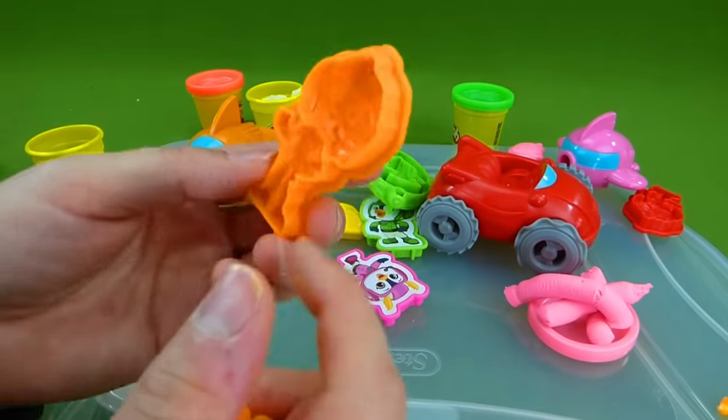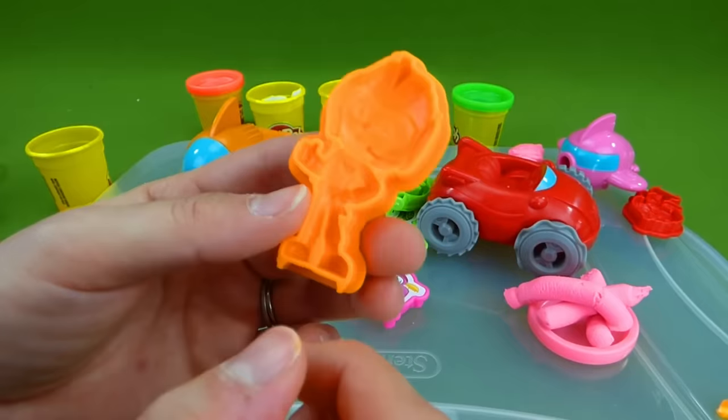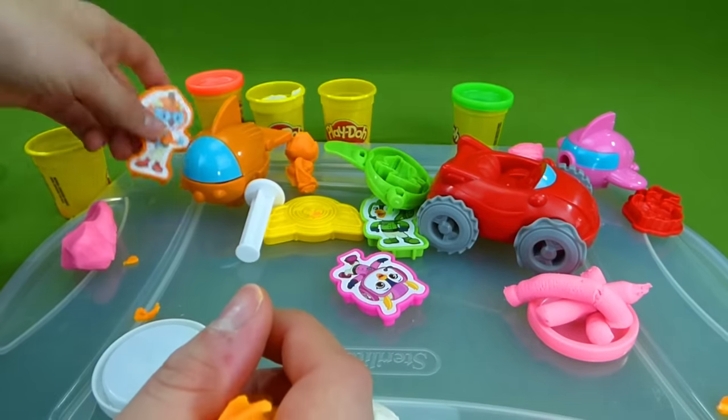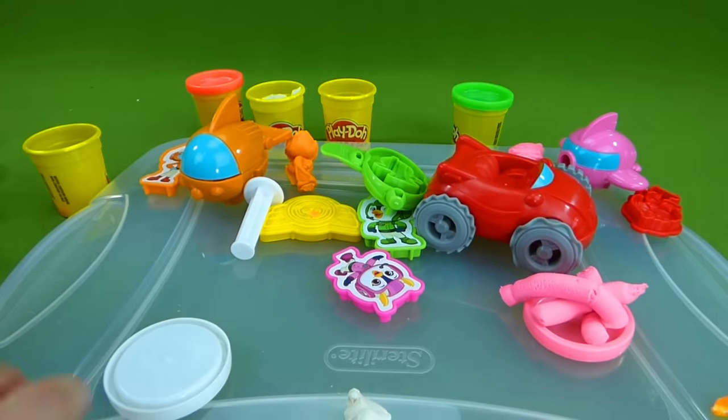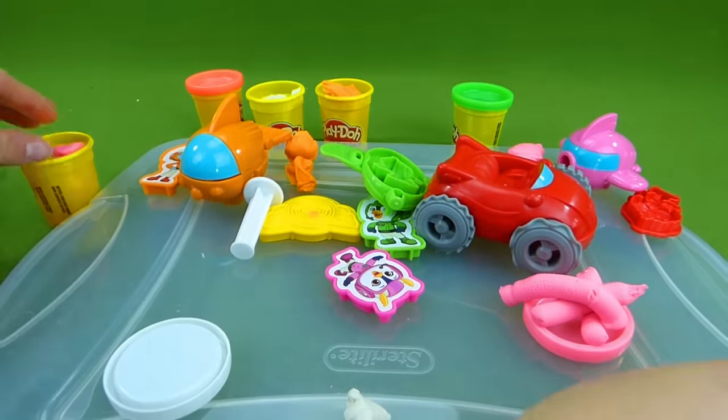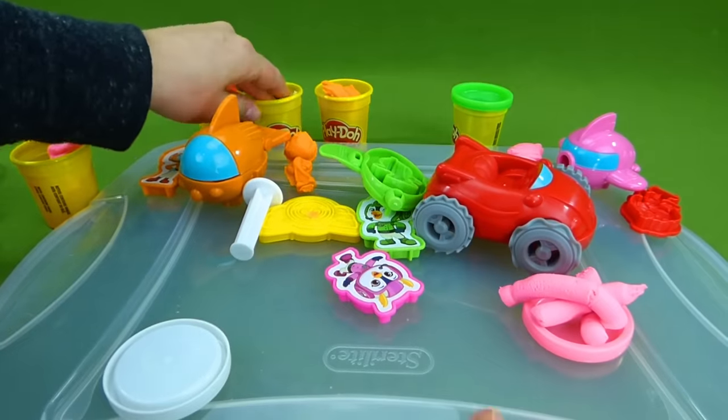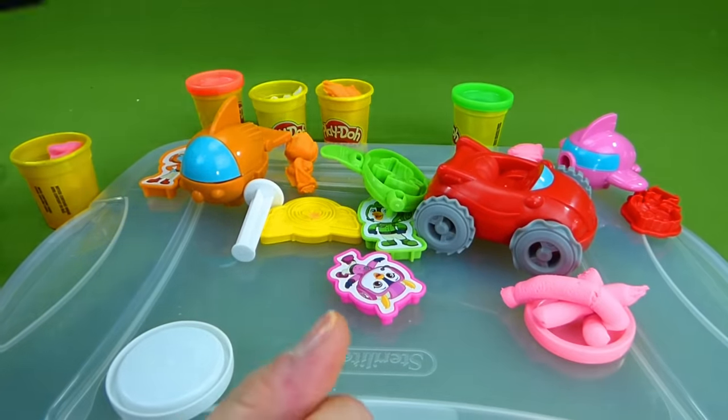And then we can make a Swift this way too. You can put him in here. Make that Swift. And so we've done the pink. And we've done the orange. And we've done a little bit of white. Let's see. Let's do Rod.